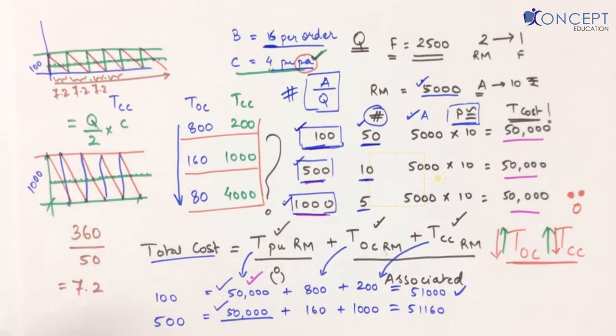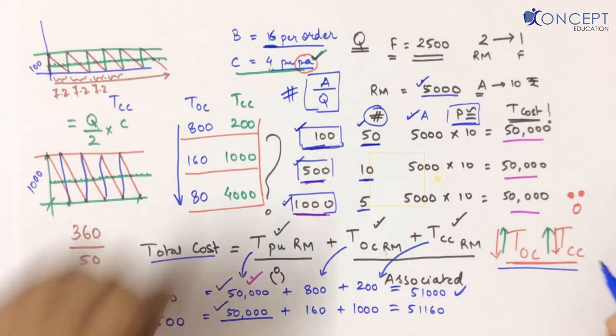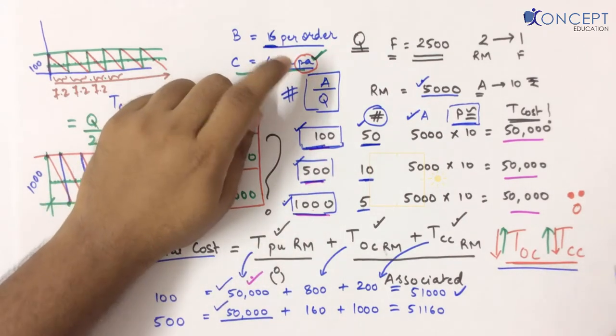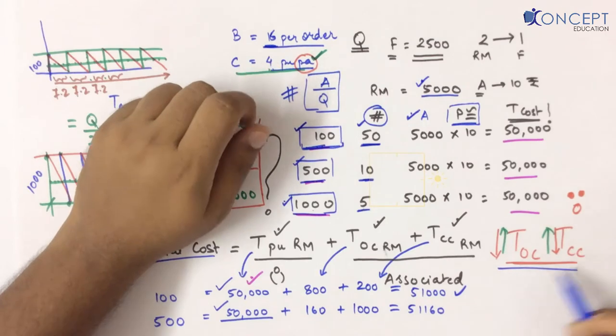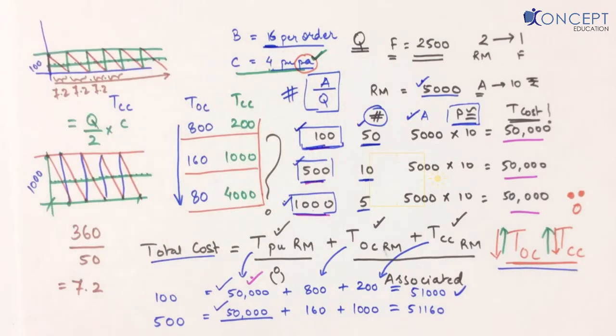Surprisingly, I found a relationship: the total ordering cost and total carrying cost — not individually, but their total — have an inverse relationship with each other.